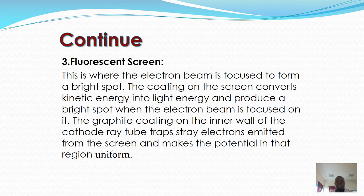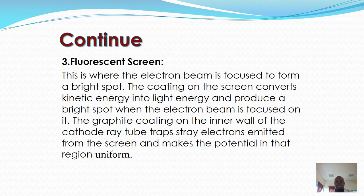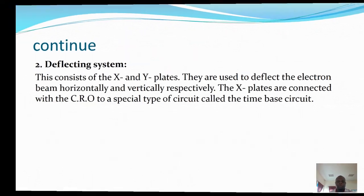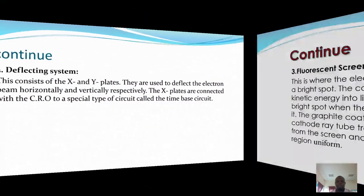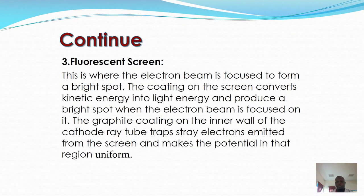The last part of the CRO is the fluorescent screen. This is where the electron beam is focused to form a bright spot. The coating on the screen converts kinetic energy into light energy, producing a bright spot when the electron beam is focused on it. The graphite coating on the inner wall of the cathode ray tube traps stray electrons and makes the potential in that region uniform. So the three main parts of the CRO are: the electron gun, the deflecting system, and the fluorescent screen.